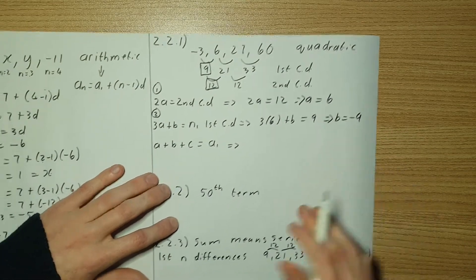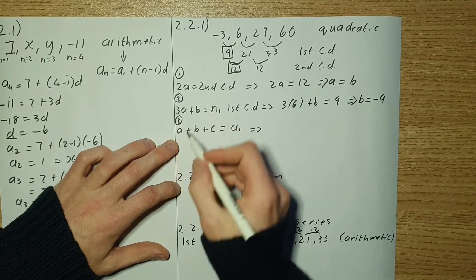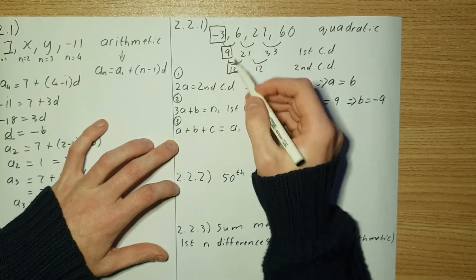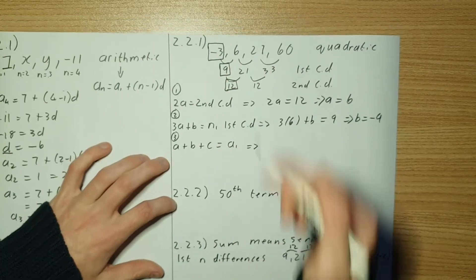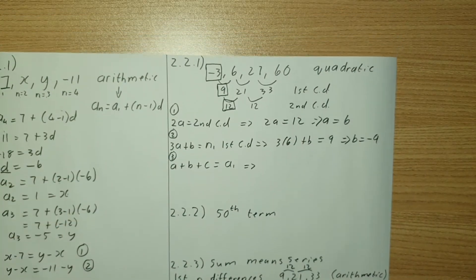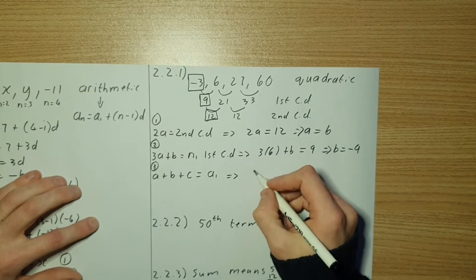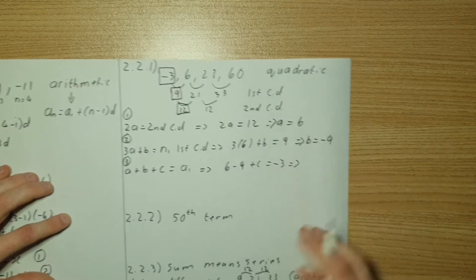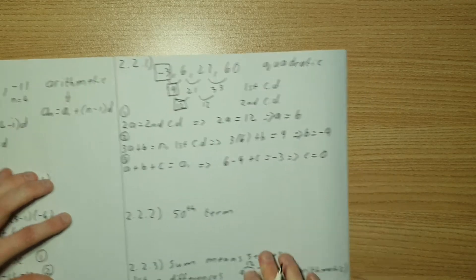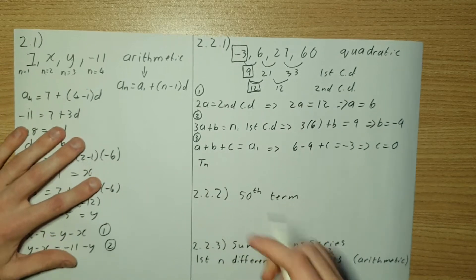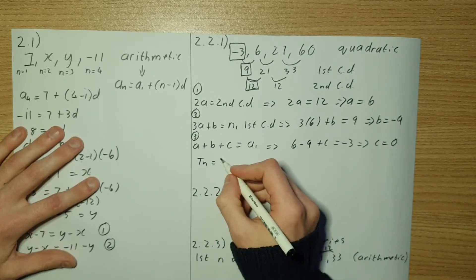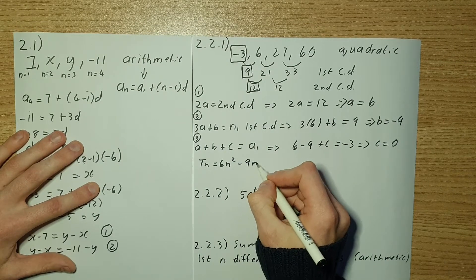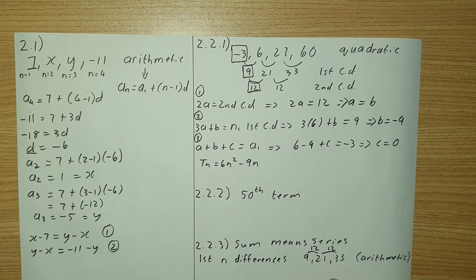Step three: a plus b plus c must equal a₁, the first term which is negative 3. You always keep to the left-hand side of the tree that you produce. So 6 minus 9 plus c equals negative 3, which gives c equals 0. Therefore the general formula is tₙ equals 6n squared minus 9n.